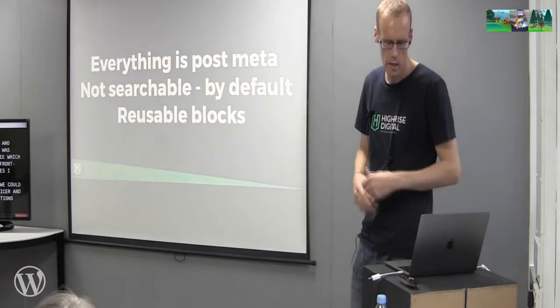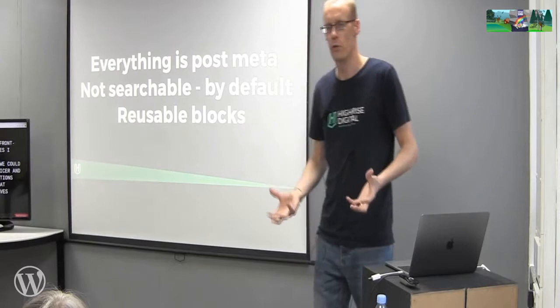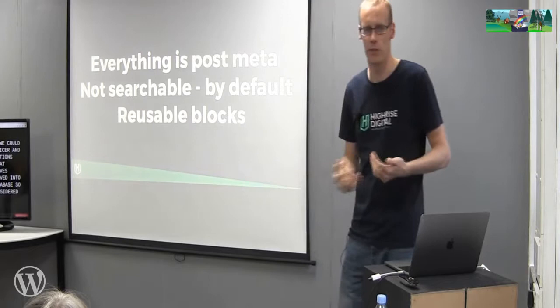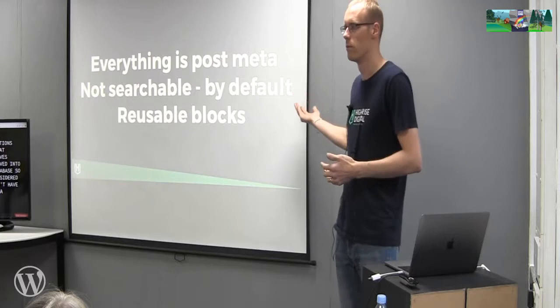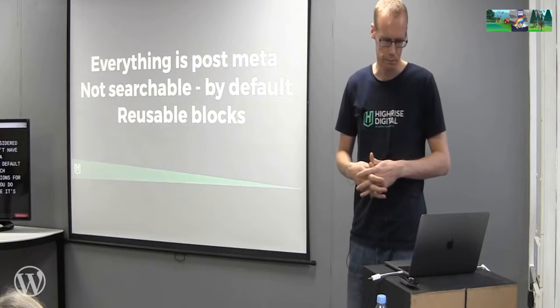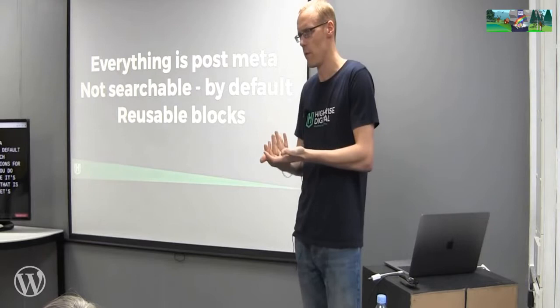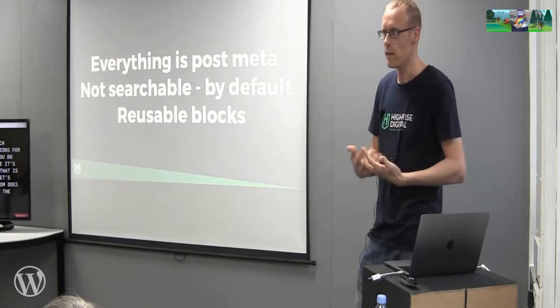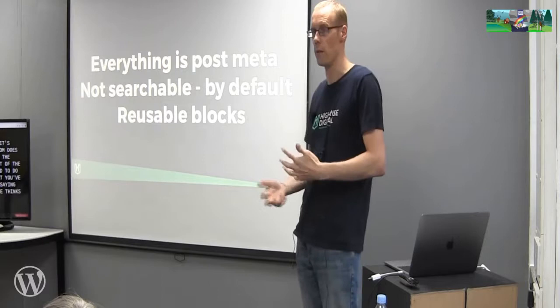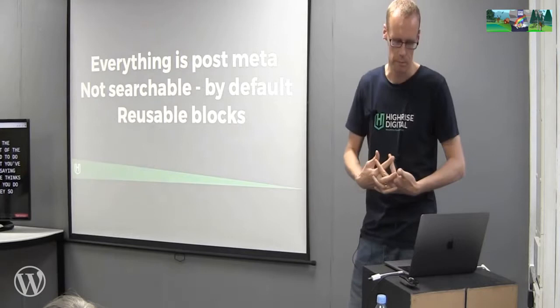Another challenge is that ACF saves everything as post meta, not in the post content in the database. This means WordPress's default search doesn't index it — there are plugins that help but it's not perfect. It also means Yoast SEO can't analyze your content, because it only looks at the post content field. There is a plugin that tries to address this, but it's a bit flaky.